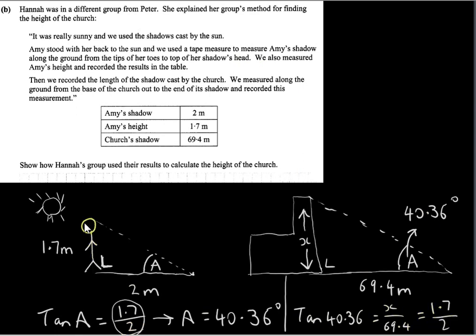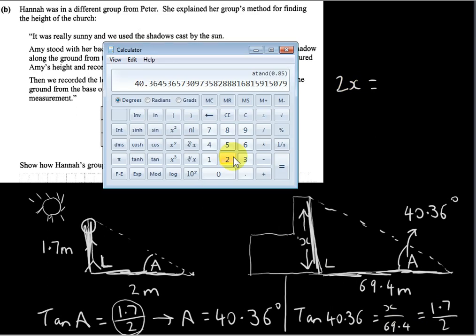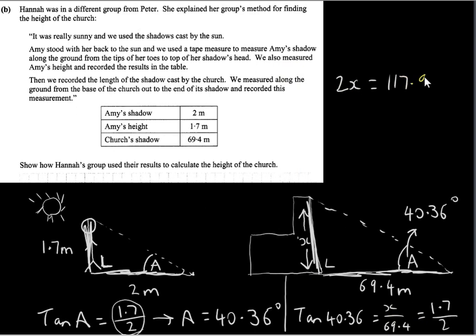So basically, the ratio of this side to this side of this triangle is the same as the ratio of this side to this side here. So 1.7 over 2 is equal to X over 69.4. So we can just solve this here just by cross multiplying. So 2 times X equals 69.4 times 1.7. 117.98. And we can get X then. Just divide by 2.